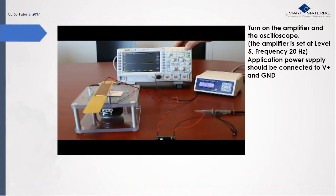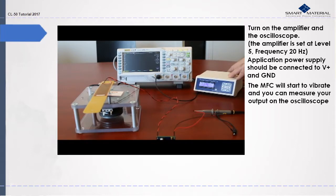The MFC immediately starts to shake providing data for the oscilloscope. The oscilloscope measures 3.3 volt output here in about 2.5 seconds time. This will vary based on the amplitude and frequency level you set. For this experiment we set the amplitude to level 5 and frequency to 20 Hz for best results.